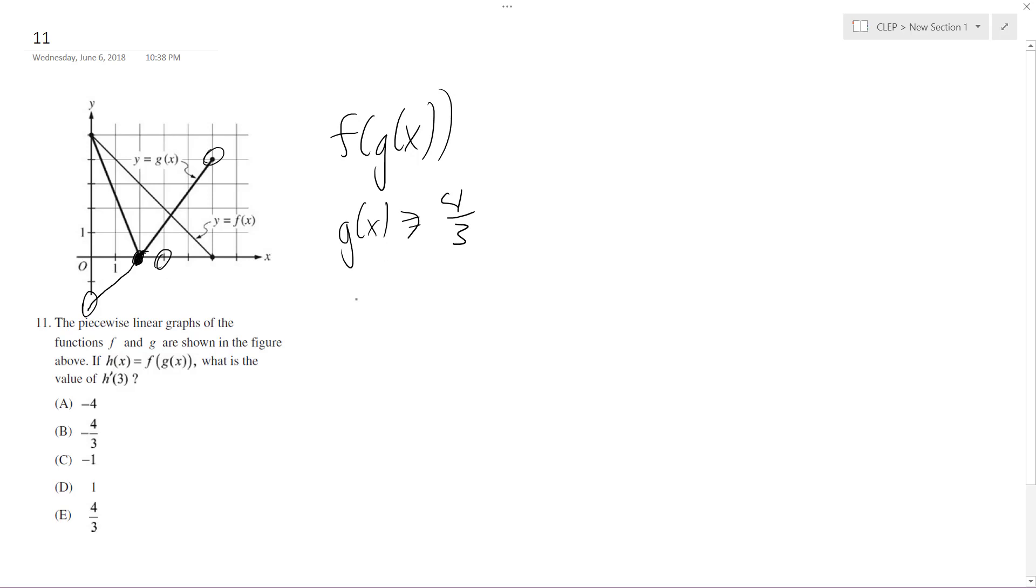So what I'm going to have here is y minus y1 equals the slope, or m, times x minus x1. So I'm going to have y minus 0 because it crosses y equals 0 at the x axis.